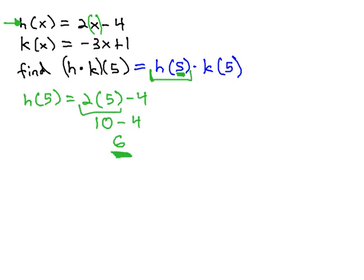So h(5) = 6, and we still need to figure out k(5). We plug 5 into the k function for each x.